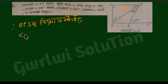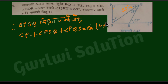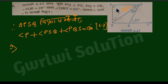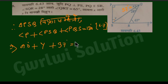In triangle PQS, angle P plus angle PSQ plus angle PQS equals 180 degrees. Angle P is 90 degrees. Angle PSQ consists of angle QSR which is 37 degrees, and angle PQS is y. So 90 plus 37 plus y equals 180 degrees. This implies y equals 180 minus 127, so y equals 53 degrees.